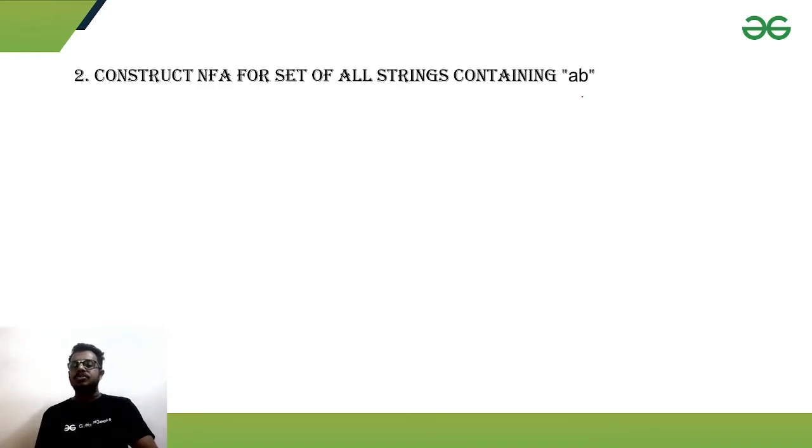Next, all the strings containing ab. Containing ab means in starting anything can come, A or B. After that, at some point, at some middle point, ab should come. After that, if we are getting ab in the middle, then it should be accepted. After that, anything also can come.